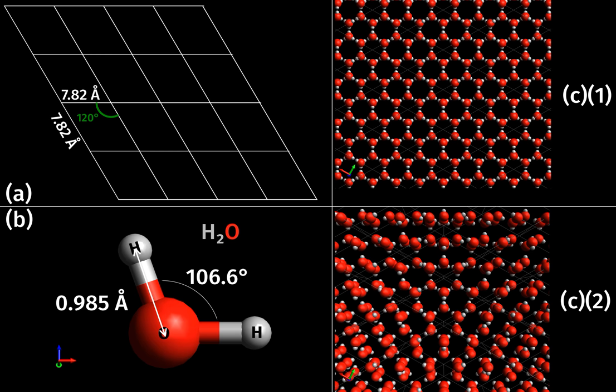The Miller indices for a plane are integers with no common factors. Negative indices are indicated with horizontal bars, as in (1̄23). In an orthogonal coordinate system for a cubic cell, the Miller indices of a plane are the Cartesian components of a vector normal to the plane. The distance d between adjacent lattice planes is related to the reciprocal lattice vector.